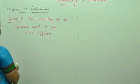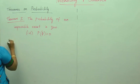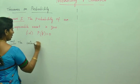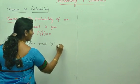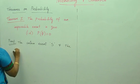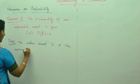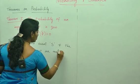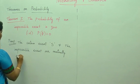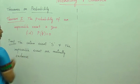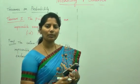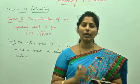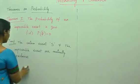Proof. The certain event S and the impossible event phi are mutually exclusive. What is mutually exclusive? Two events are said to be mutually exclusive if the occurrence of one excludes the occurrence of the other. That is what mutually exclusive means.